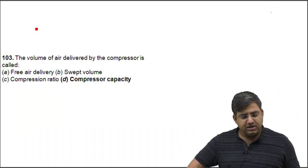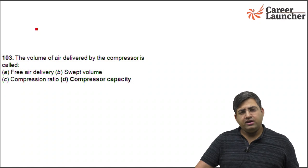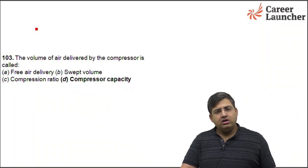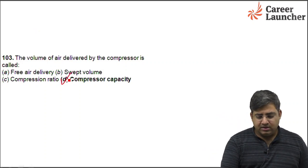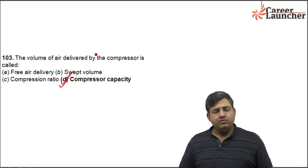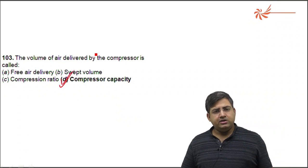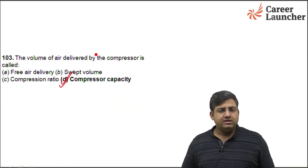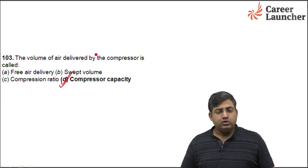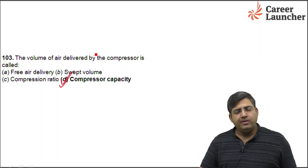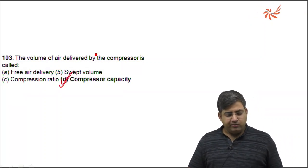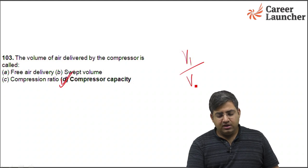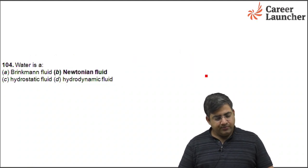The volume of air delivered by the compressor is called its capacity, so the right answer is D. Swept volume is the volume from TDC (top dead center) to BDC (bottom dead center) — the volume of the cylinder without clearance volume. Total cylinder volume equals swept volume plus clearance volume. Compression ratio is the volume before compression. The right answer for Q103 is D.